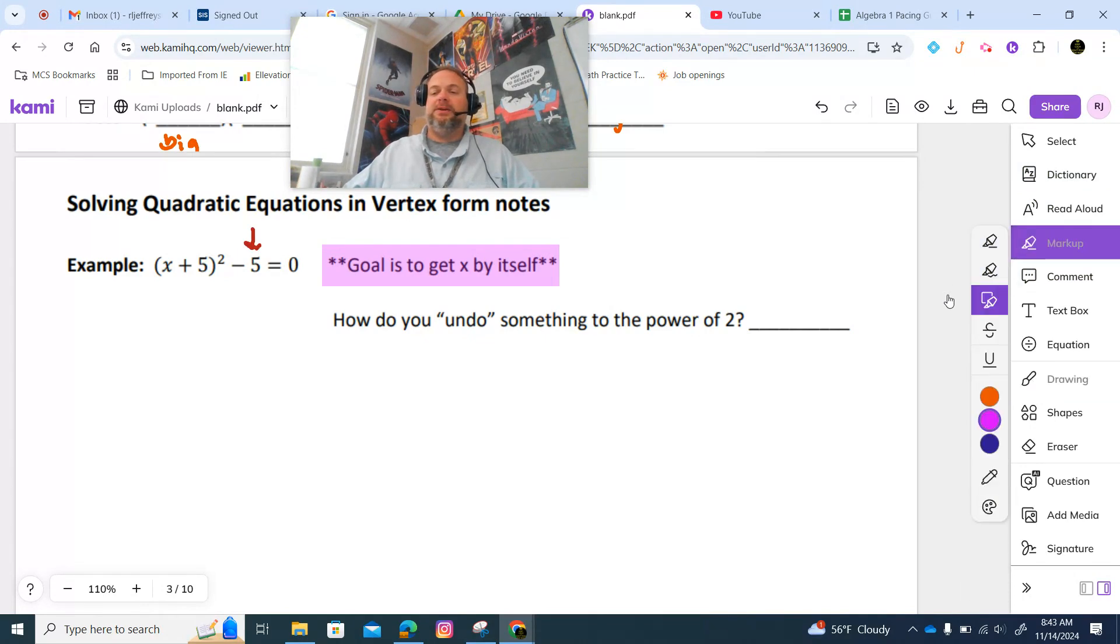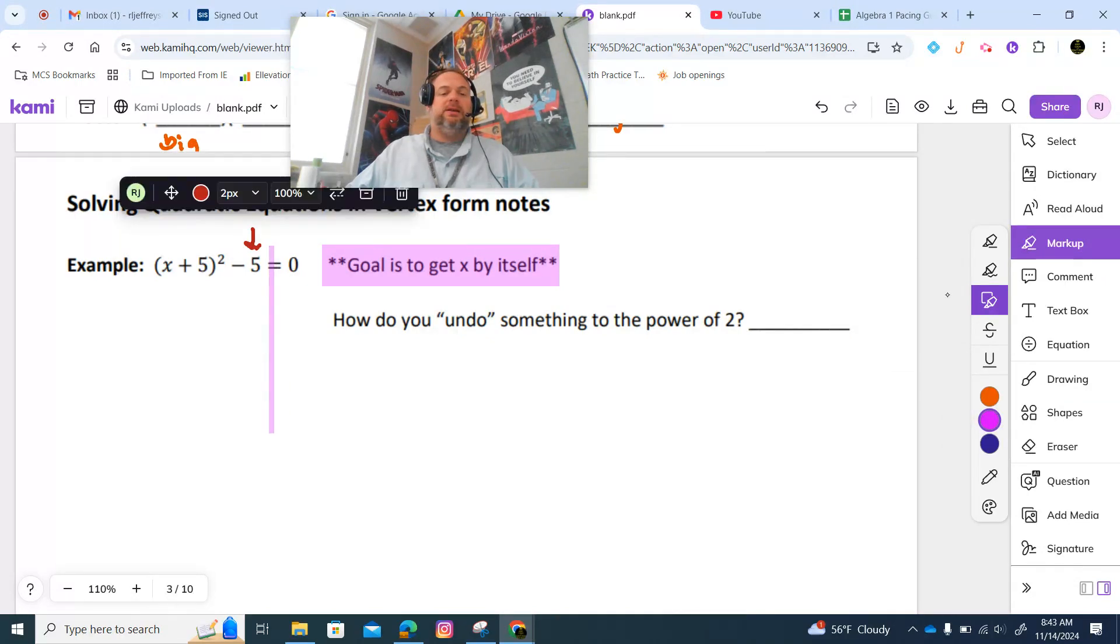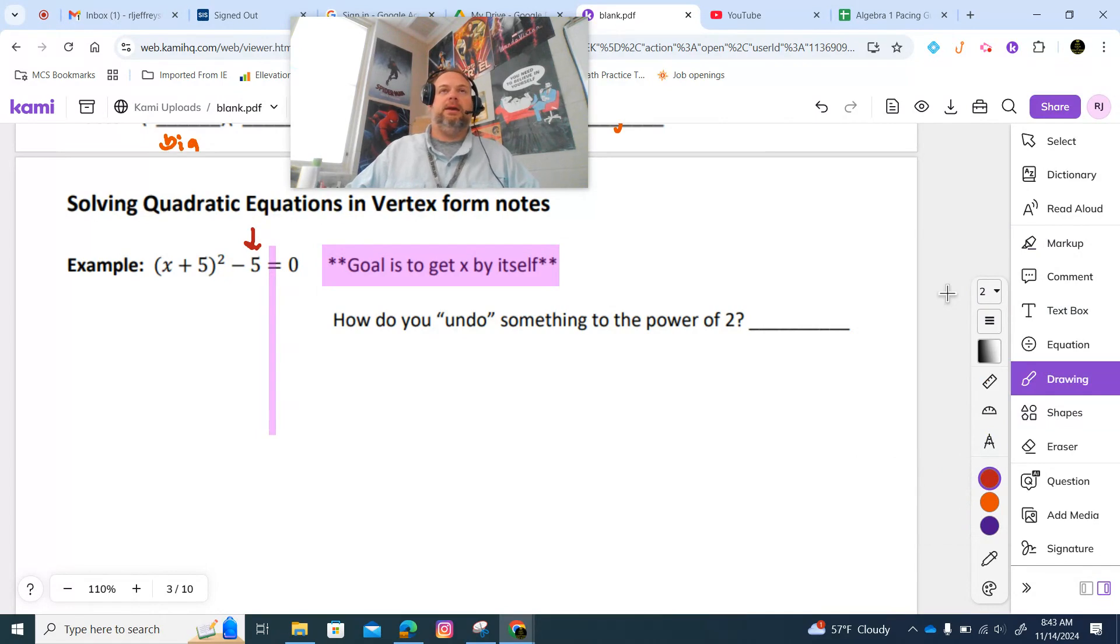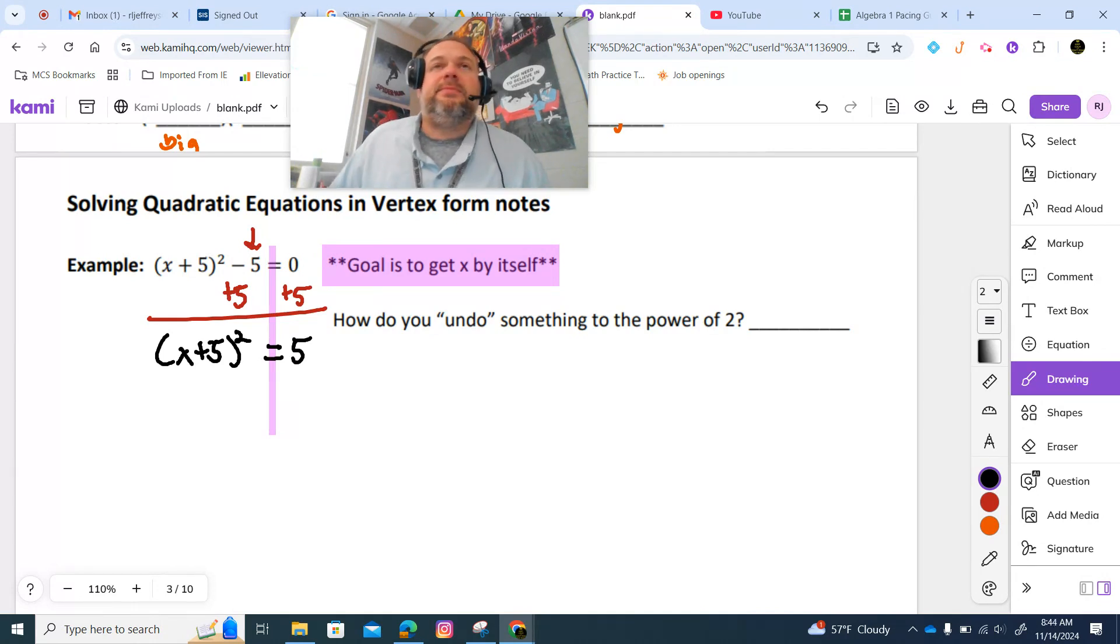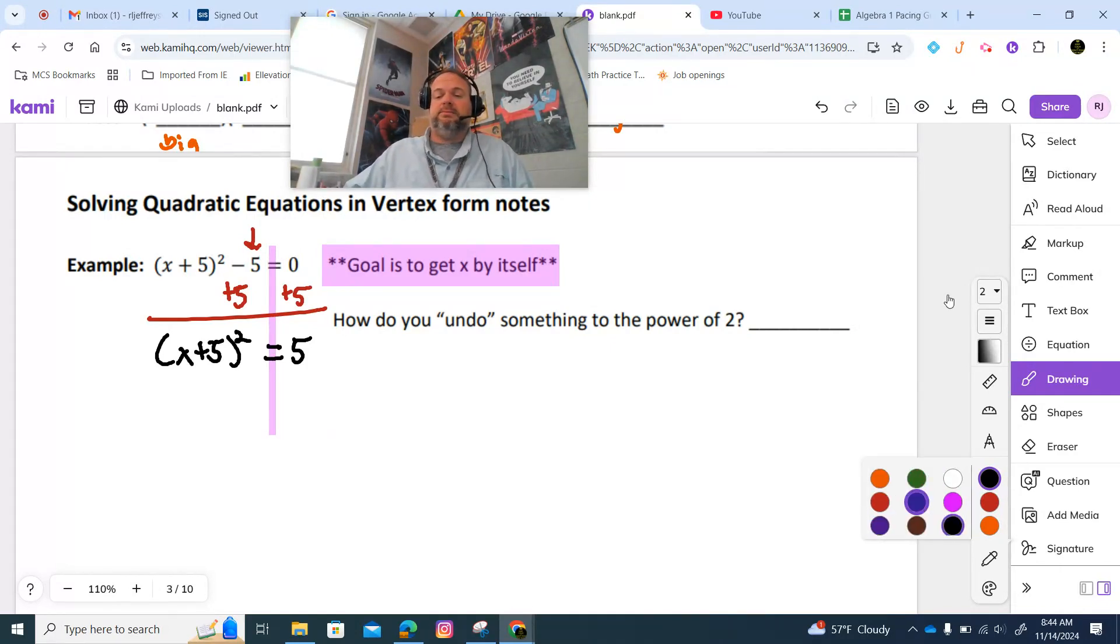We're going to start here. How would I get rid of this minus 5? Good, everybody. So we end up with this right here. Now on your paper it says how do you undo, because remember we're undoing or doing the opposite of all of our operations. How do you undo something to the power 2 or something squared? Very good, who said that one? We're going to take the square root.